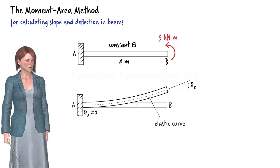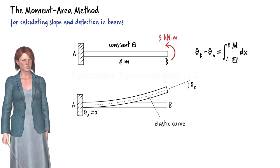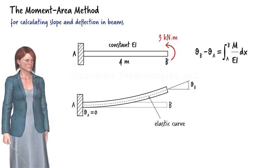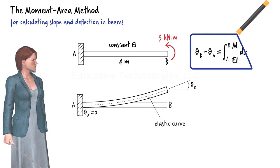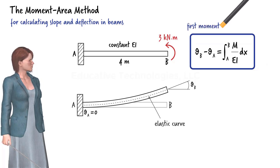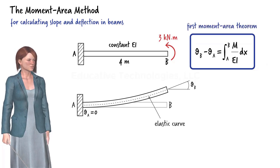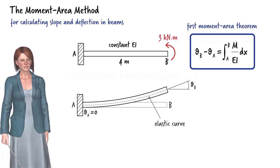According to the moment area method, the difference between the two slopes is equal to the area under the moment over EI diagram between the two points. This is called the first moment area theorem. Although we are referring to points A and B here, the theorem works for any pair of points on the beam.